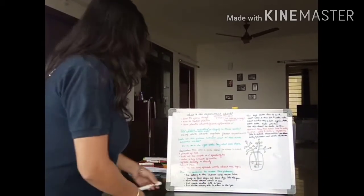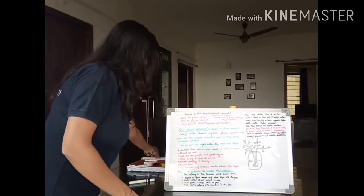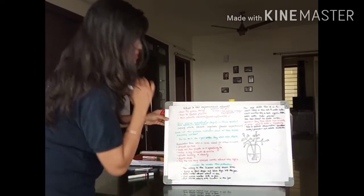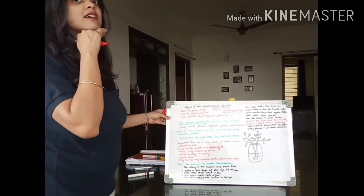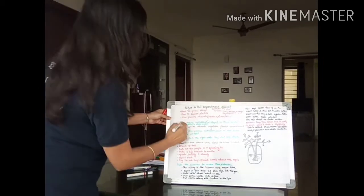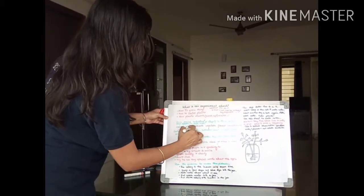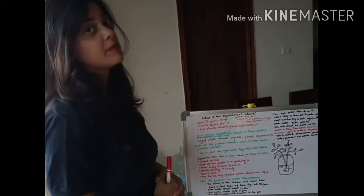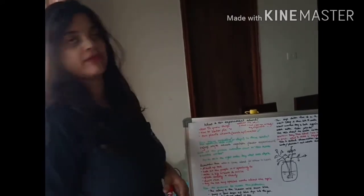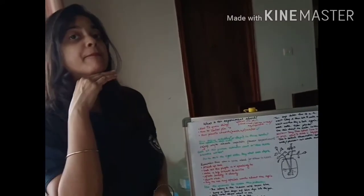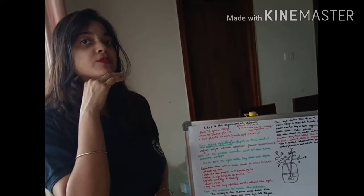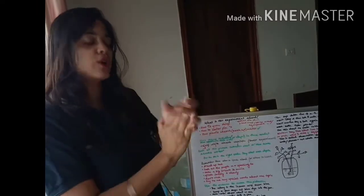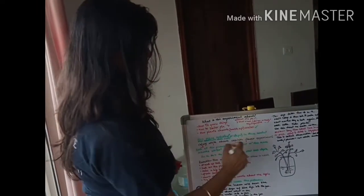Let me write down the number of syllables against each word. Celery has three syllables. White has one syllable. Now, how many syllables does the word absorb have? Absorb — two syllables.